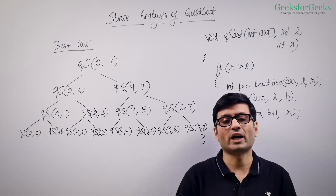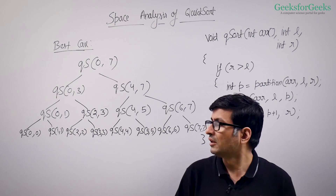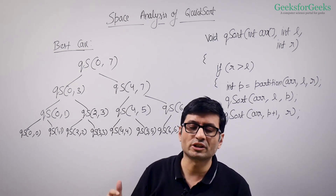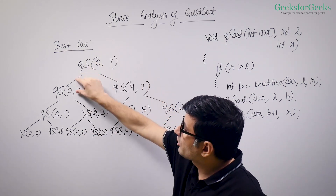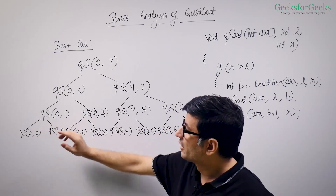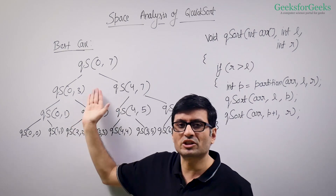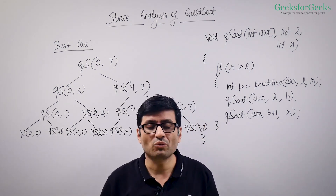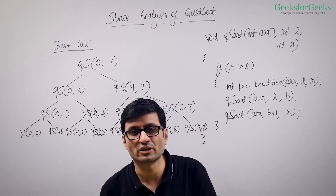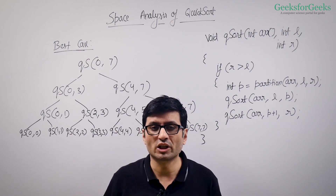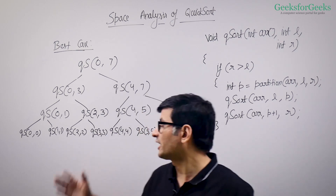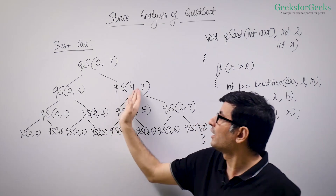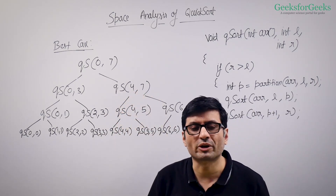The best case happens when your array is divided into two equal halves at every recursion. The extra space requirement of quicksort can be seen as the number of levels in the recursion tree. The height of the recursion tree is Θ(n) in the worst case, but it is minimized when you have equal elements on both sides at every level. In that case, the height is log n.